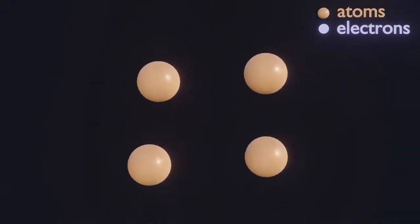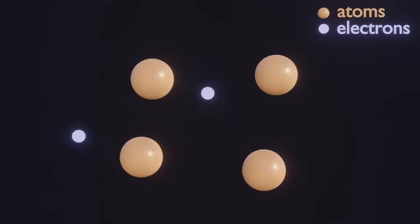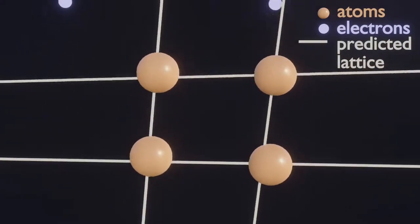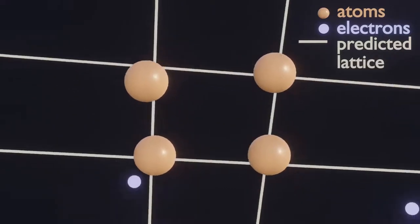At a microscopic level of a solid, the atoms look like this. We have the atoms arranged in almost a regular structure called the lattice.